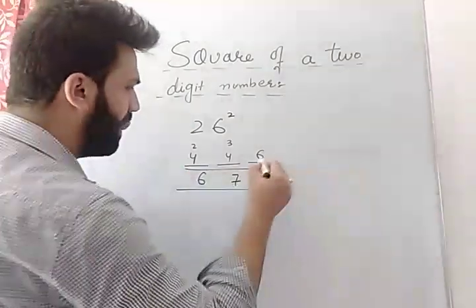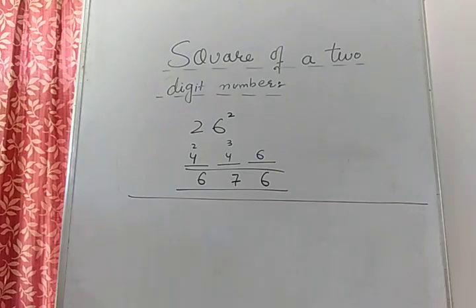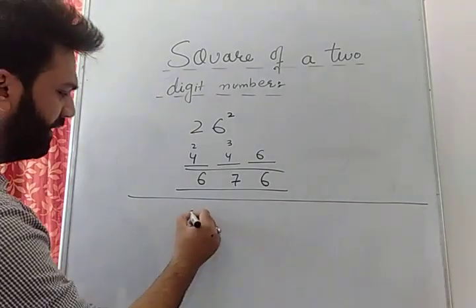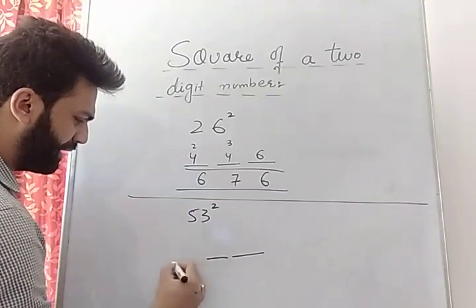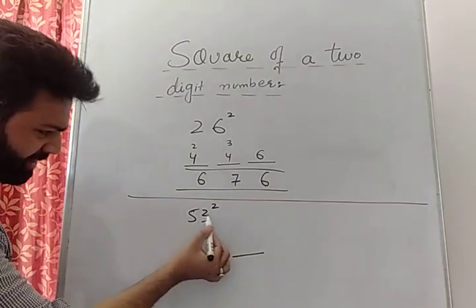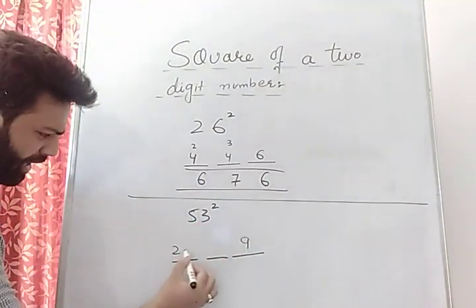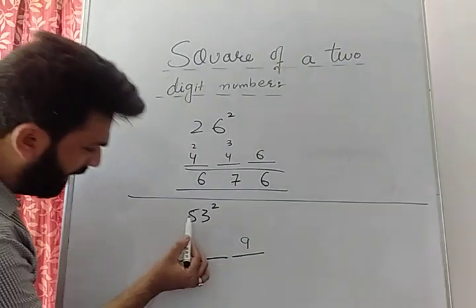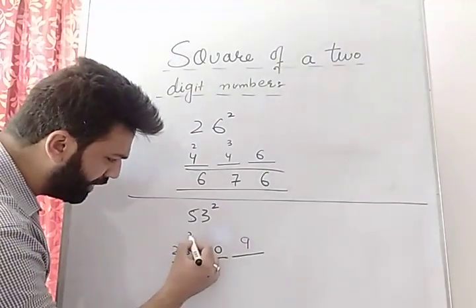Let me make another example. We have to find 53 squared. What to do? Keep 3 spaces. What is 3 squared? 9. What is 5 squared? 25. Now 5 into 3 is 15, into 2 is 30 — so write 0, carry 3.